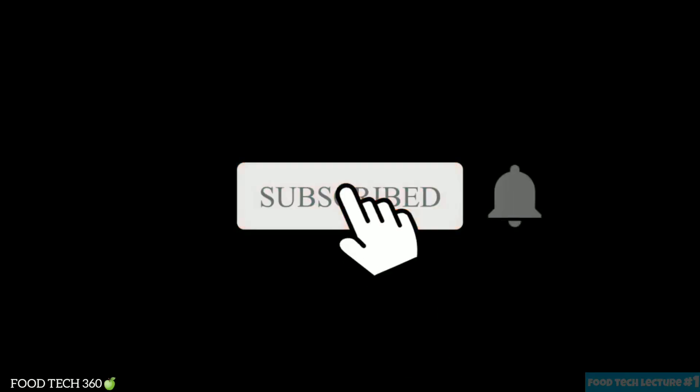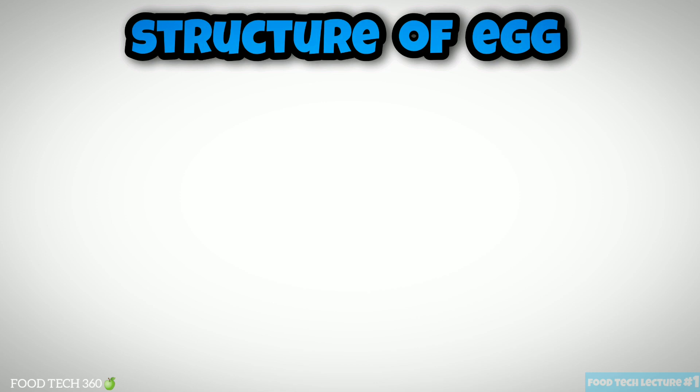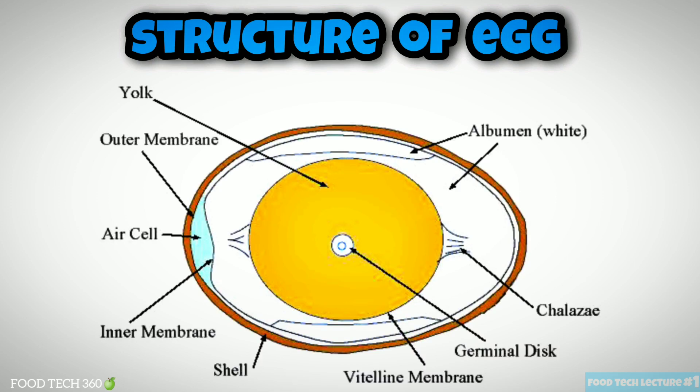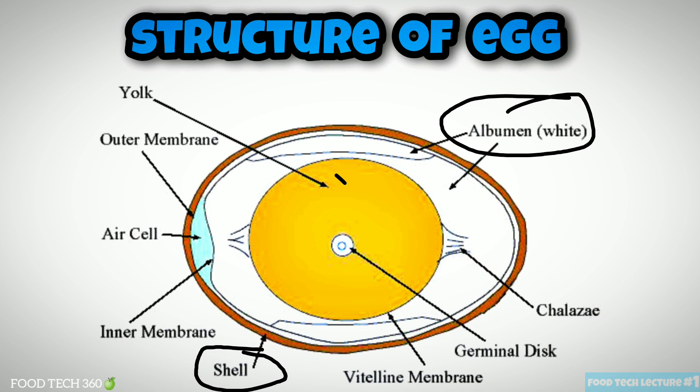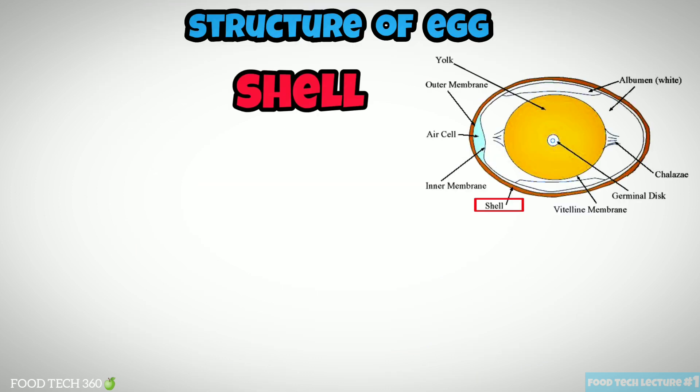Without any further delay, let's get started by analyzing the structure of the egg. The egg consists of mainly three parts: shell, albumin, and yolk. We'll go through all the parts one by one. First, we'll see the structure of the shell.